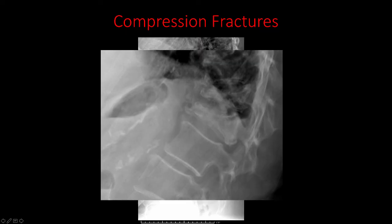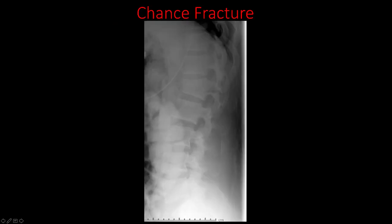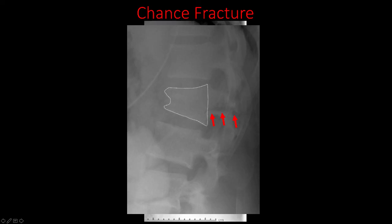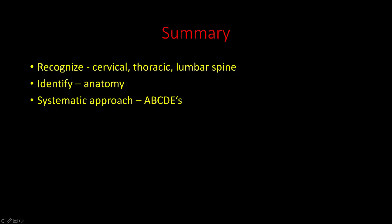In this example, there is abnormal loss of height of the lower thoracic vertebral bodies. The normal vertebral body should have a rectangular shape. This kind of fracture is called a compression fracture. In a different example, a vertebral body has loss of height anteriorly, with fractures extending from the posterior aspect of the vertebral body into the pedicle, transverse process, articular process, and spinous process. This fracture involves the anterior to posterior aspect of the vertebra and is called a Chance fracture.